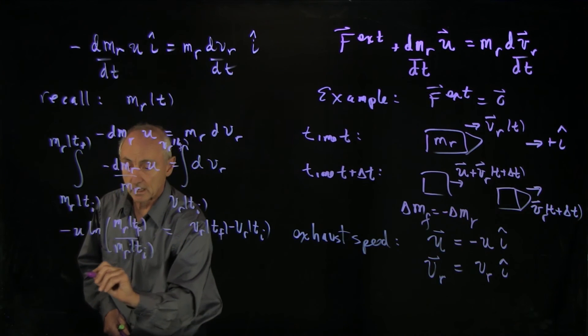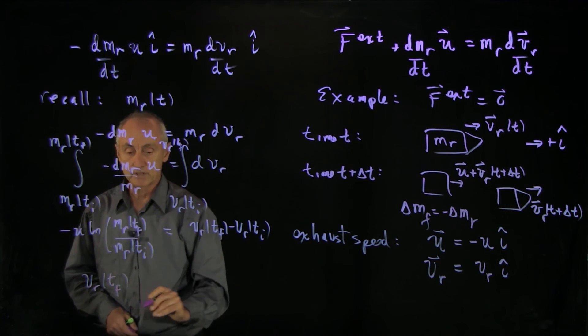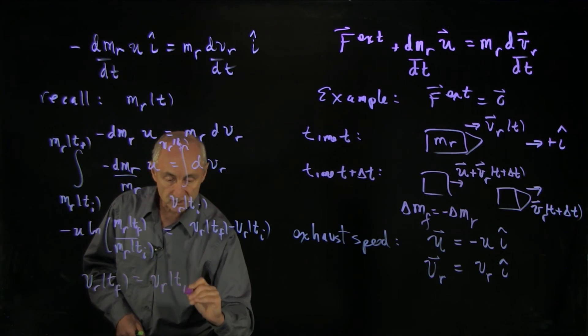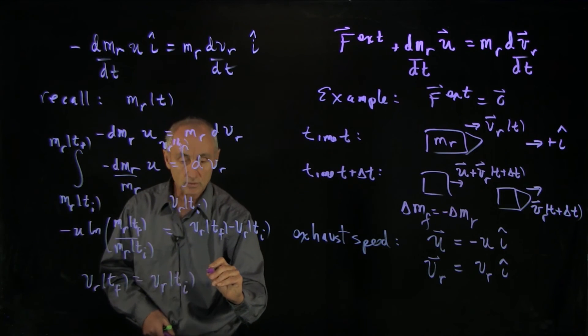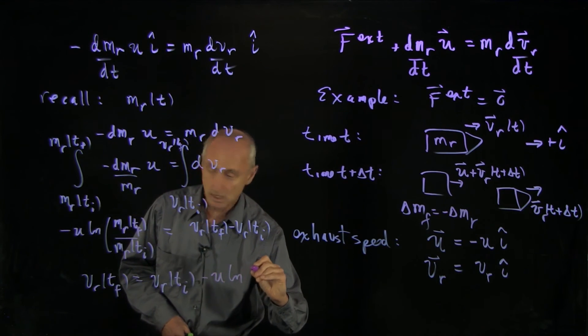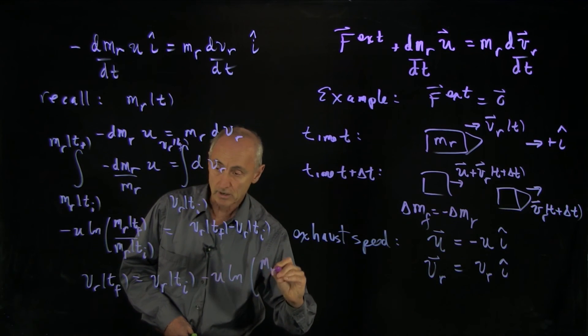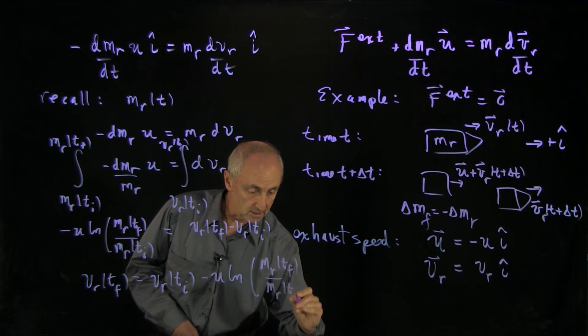And so we conclude that the velocity of the rocket at its final time is equal to the velocity of the rocket at its initial time. Now, here, I'll keep this minus sign in here, minus natural log of m_r(t_final) over m_r(t_initial).